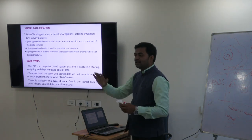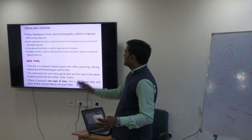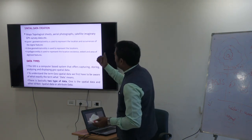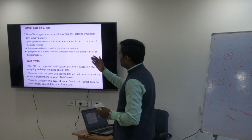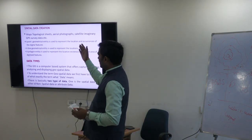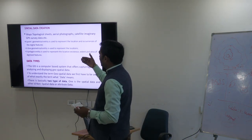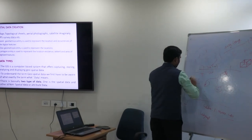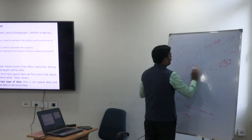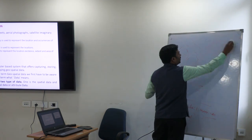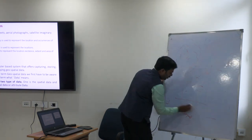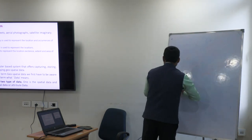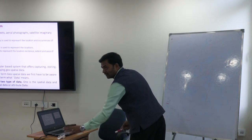After having these four components, the first and foremost step in GIS is spatial data creation. How can it be done? From maps, topographical sheets, aerial photographs, satellite imagery, GPS surveys, etc., as data sources for GIS. To create any spatial data in a map, we use point, line, and polygon. All geographical features will be demarcated using only these three entities. Please remember: point, line, and polygon.